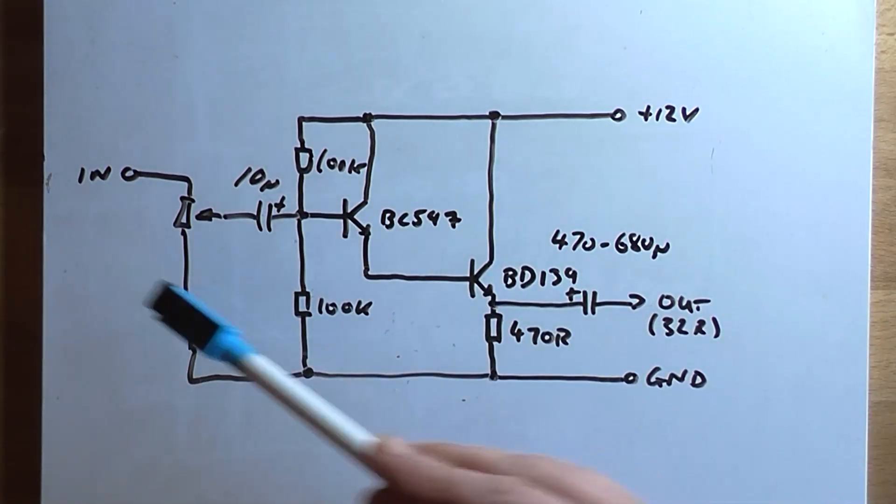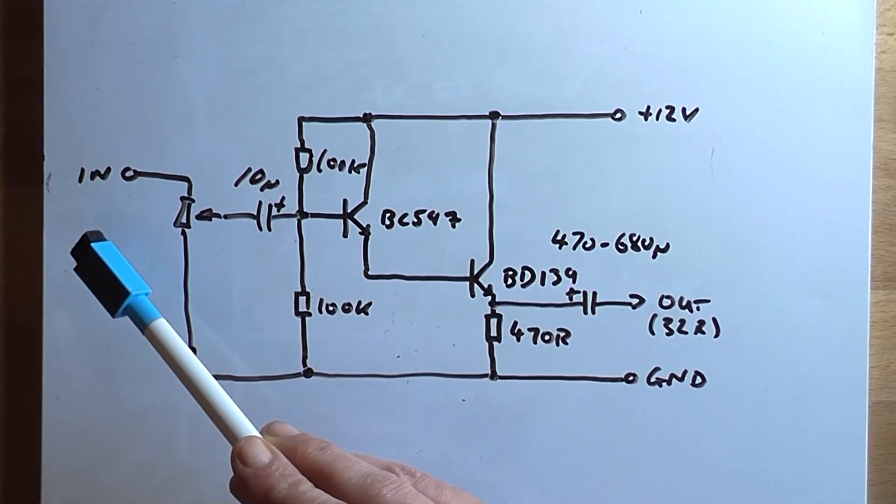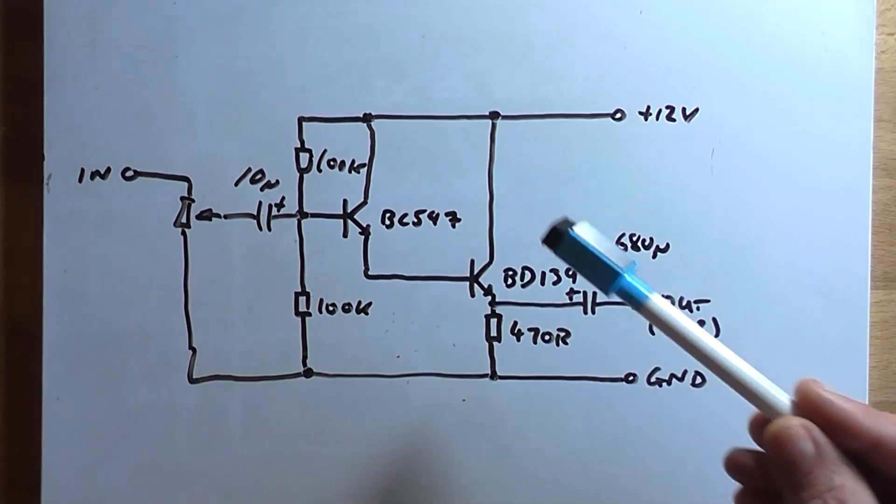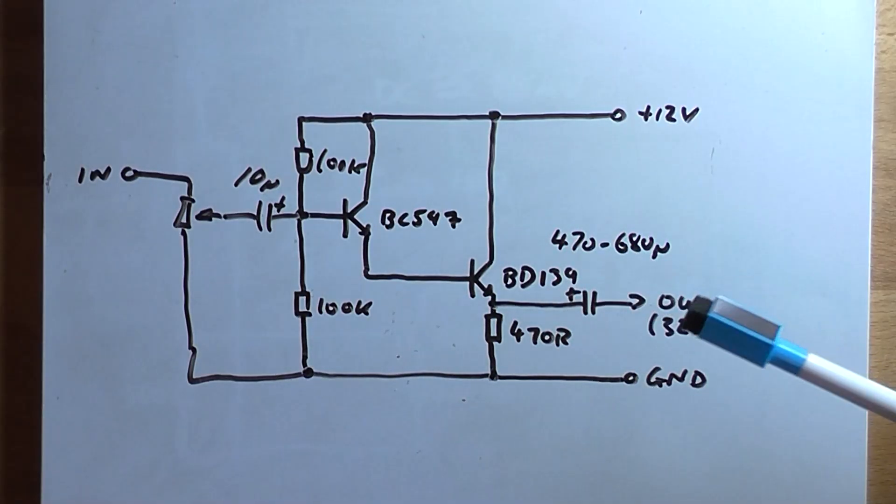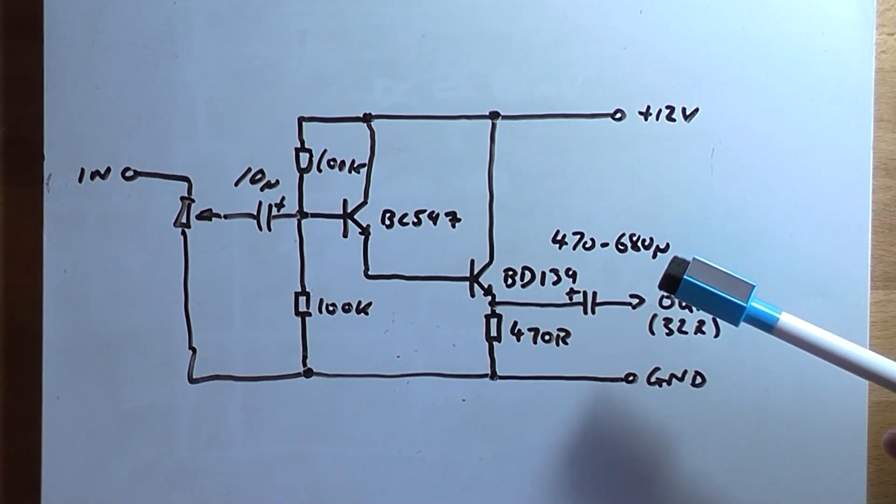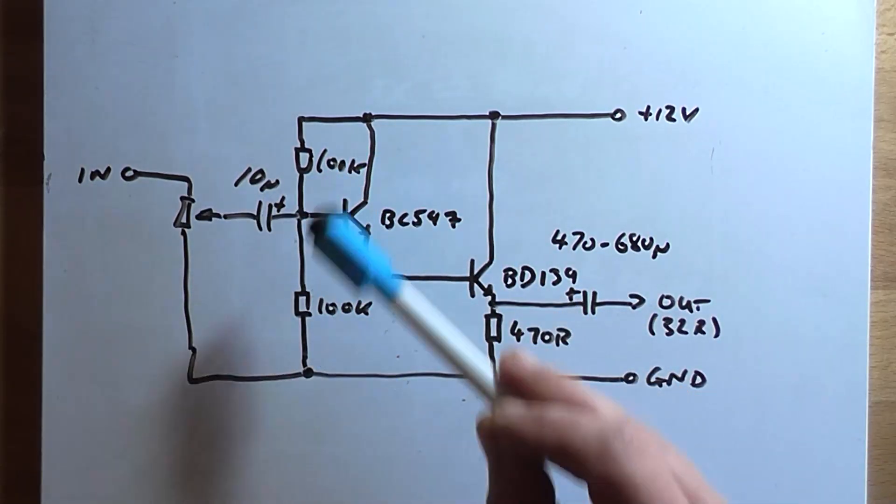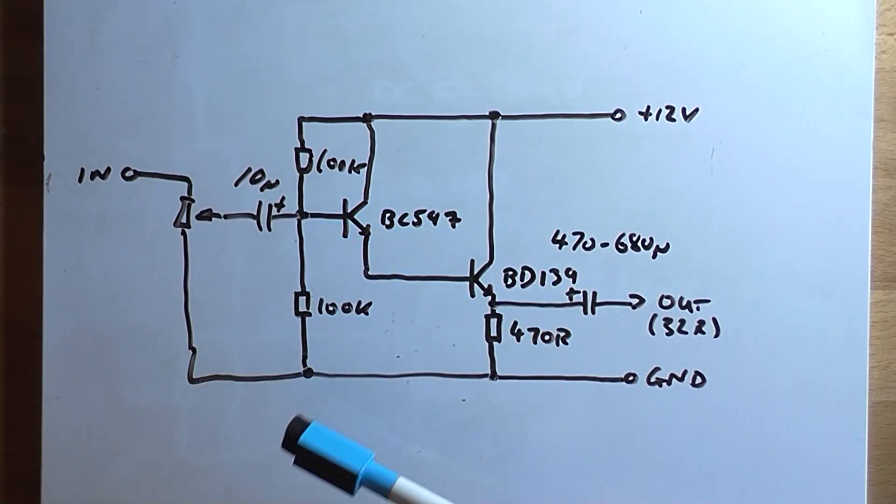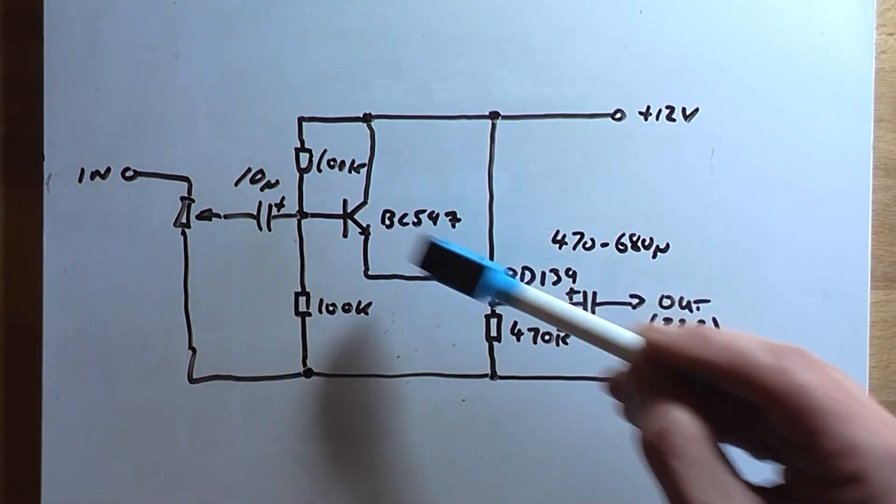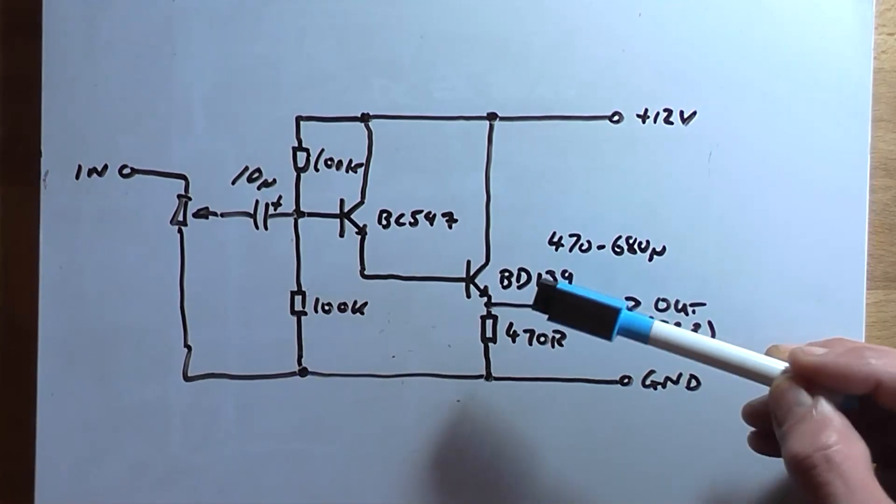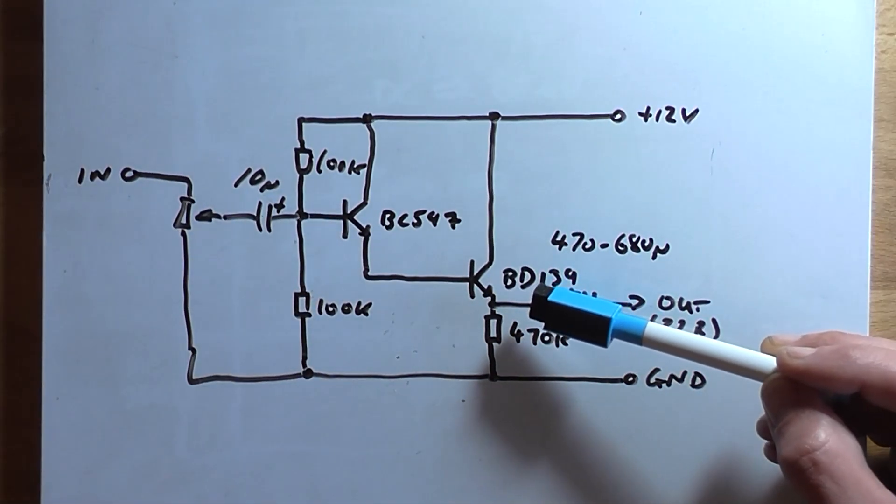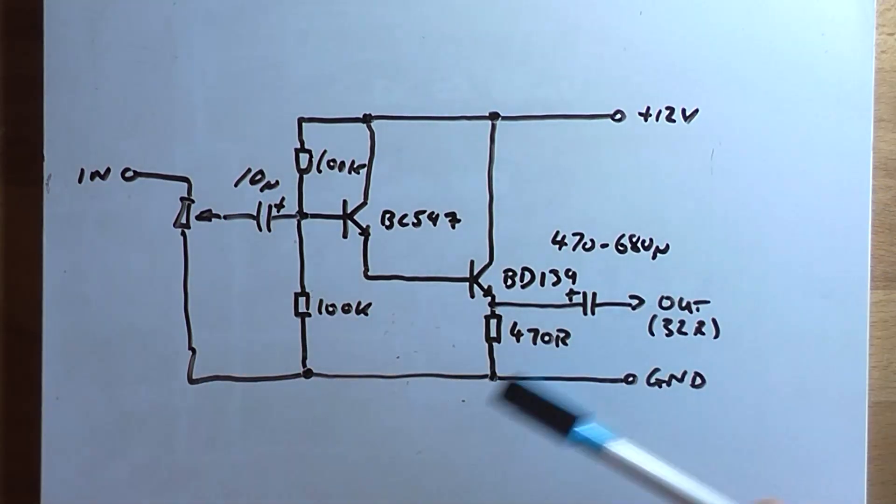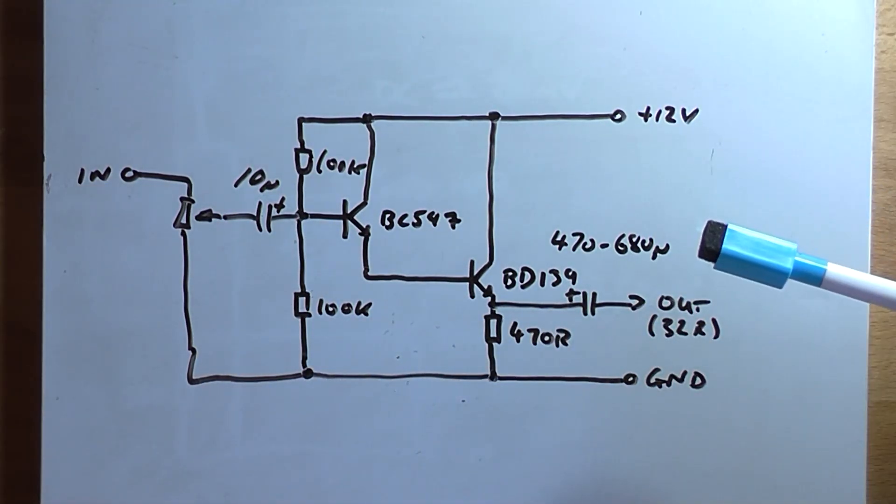Also it depends on the input source. Now if the input source like a preamp doesn't have enough voltage gain coming out in the first place, well you're going to get very low volume at the headphones. But this basic Darlington driver is biased at the halfway voltage point of plus 12 volts, so we have six volts roughly here, and we'd expect to see with including the diode drops of the transistors here about five volts at the emitter. So what I'm going to do is I'm going to build this up on a bit of breadboard that I've got spare.